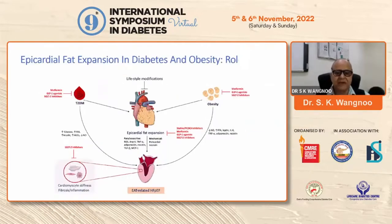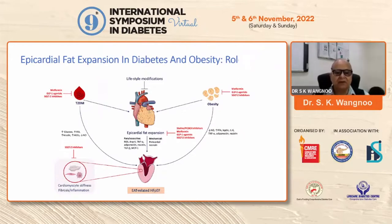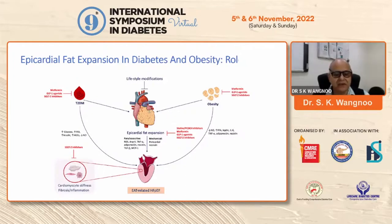The whole cycle of diabetes, obesity, and epicardial fat expansion can also be linked with HFpEF — heart failure with preserved ejection fraction. The drugs which can be used alongside lifestyle modification for epicardial fat reduction include metformin, GLP-1 receptor agonists, SGLT2 inhibitors, and sometimes statins and PCSK9 inhibitors.